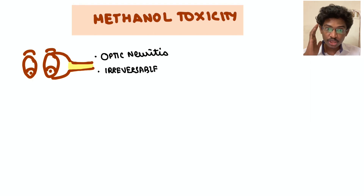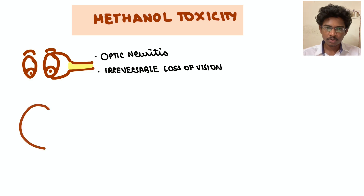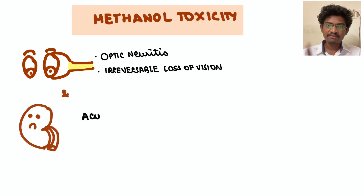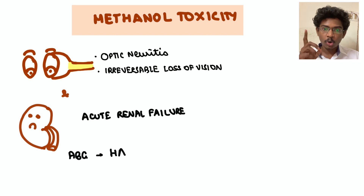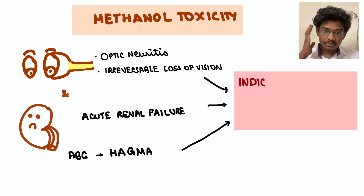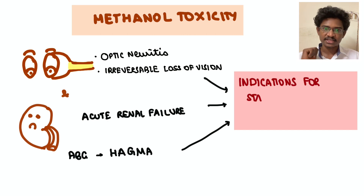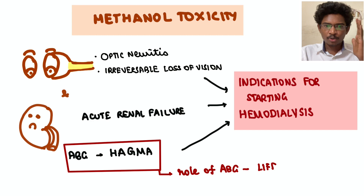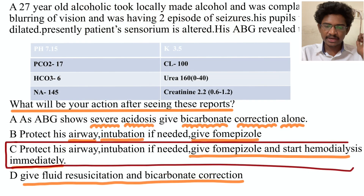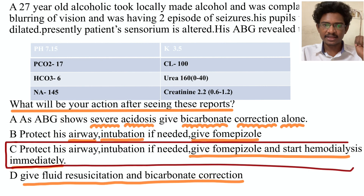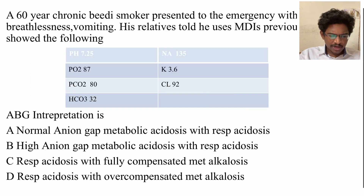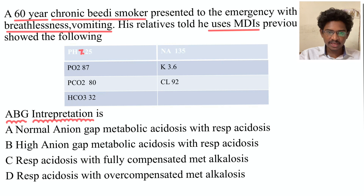The optic neuritis from methanol is irreversible, and acute renal failure here is life-threatening. ABG plays a vital role in diagnosing this. The answer is C: protect the airway, intubate if needed, give fomepizole (an alcohol dehydrogenase inhibitor), and start hemodialysis immediately, as the patient has all features of methanol toxicity.